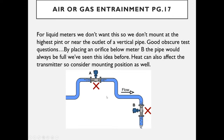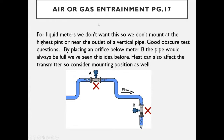The ILM recommends that for liquid meters, mounting at the highest point should be avoided to prevent gas bubbles. Placing an orifice downstream can create a higher pressure area which keeps bubbles from forming, ensuring full pipe. Heat can also affect the transmitter — on high temperature lines the transmitter may overheat, so consider mounting it sideways or upside down to minimize heat exposure.